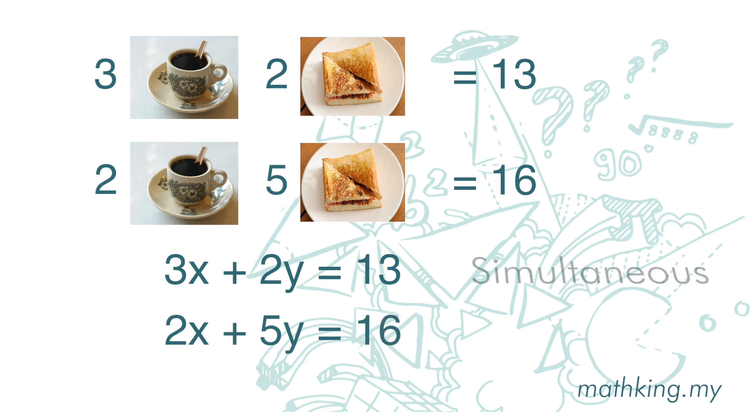Now, we have simultaneous equations. In simultaneous equations, we have a definite answer or a definite set of answers. We can find out how much is a cup of coffee and how much is a plate of roti baka.